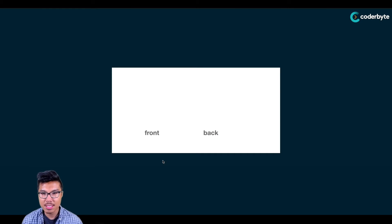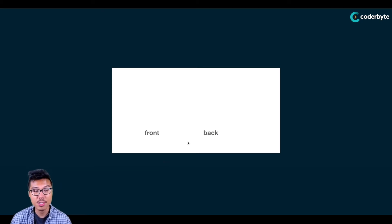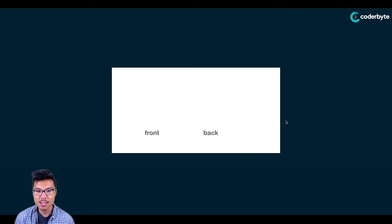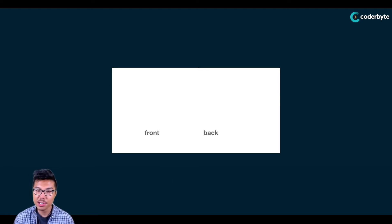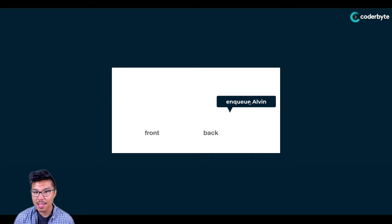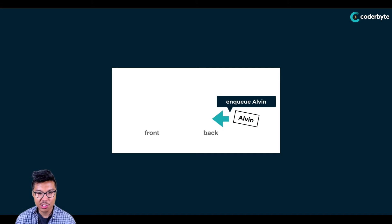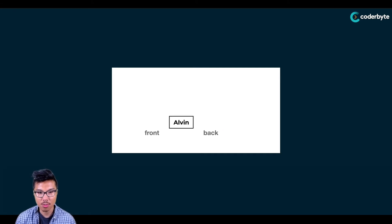Let's get some insight into how to visualize a queue. When you visualize a queue, you'll want to reference the two particular ends — I'm going to be adding things at the back, and items will leave through the front. Let's say I do an enqueue operation and enqueue the item Alvin. Enqueue just means adding something to a queue, so Alvin shows up within the queue as the only item.